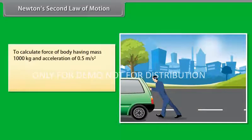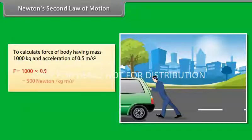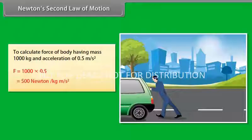To calculate force of body having mass 1000 kg and acceleration of 0.5 meter per second square, then F equals 1000 × 0.5 which equals 500 Newton or kilogram meter per second square. This is an application of Newton's second law of motion.